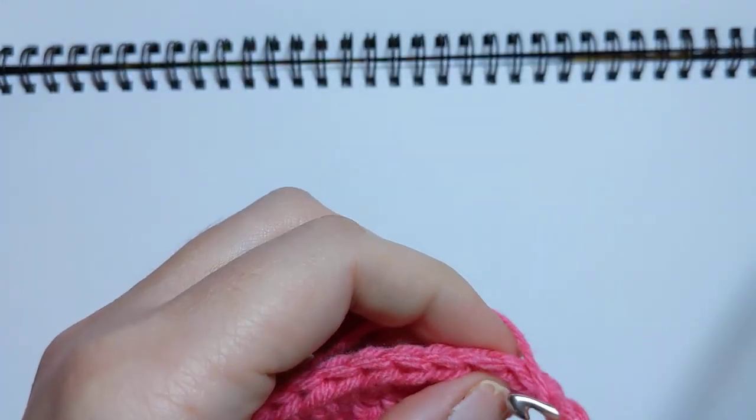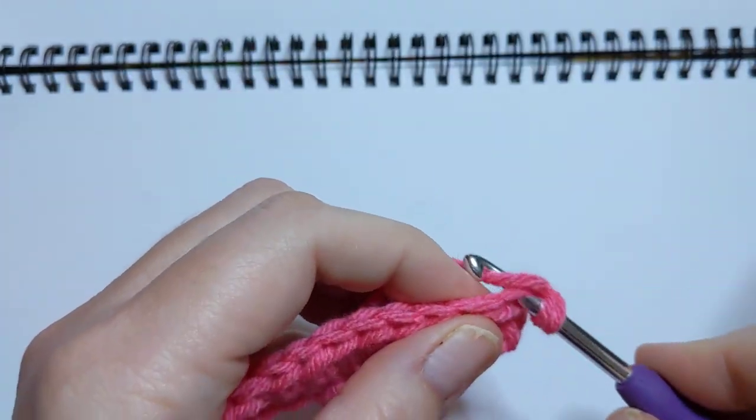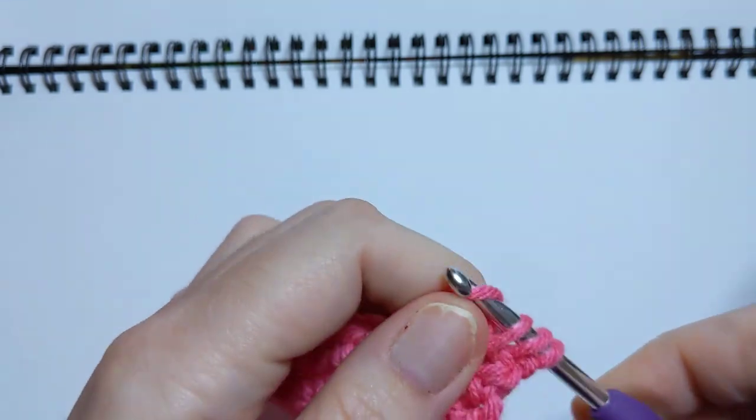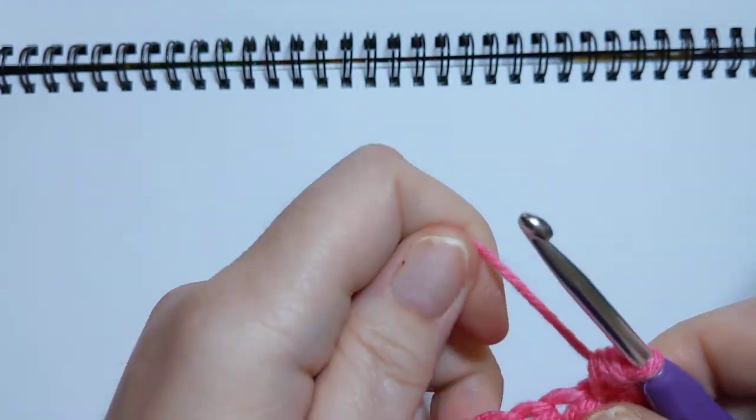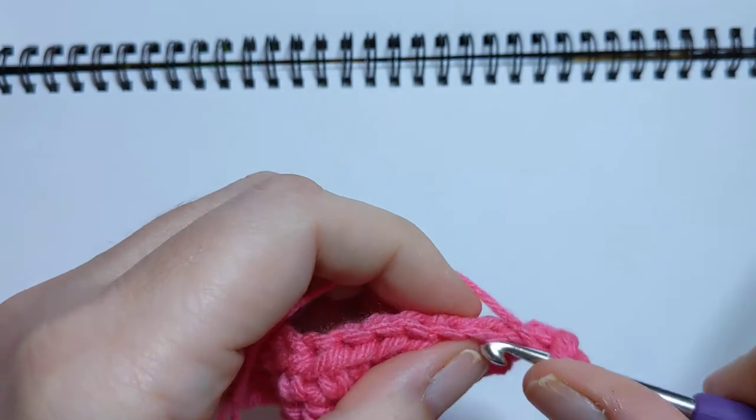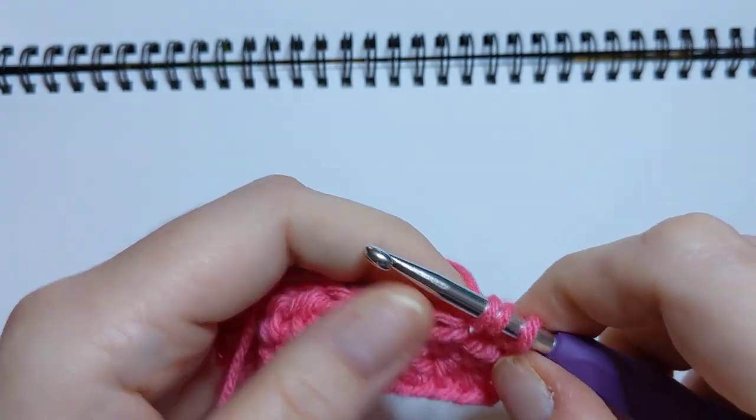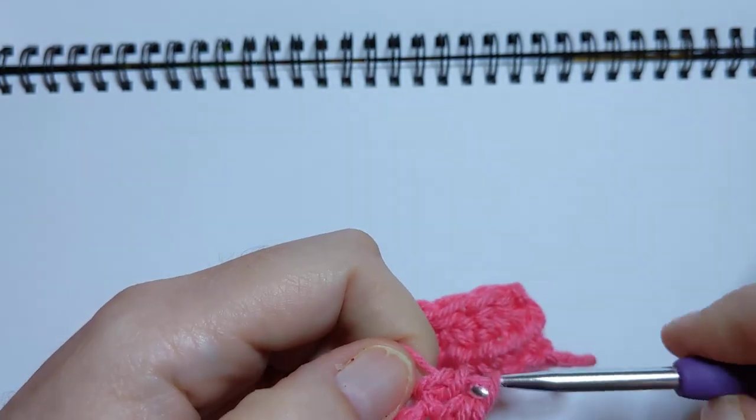I'm going to chain one and turn my work. That chain one does not count as anything. Yarn over, go in—we're just doing half double crochets again for a couple here. We're going to do it again: yarn over, go into the stitch, pull up a loop, yarn over, go through all three.